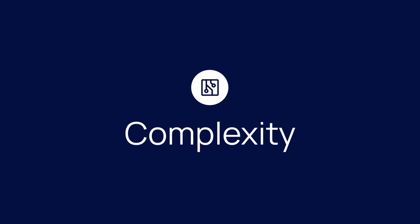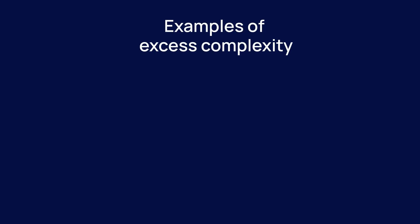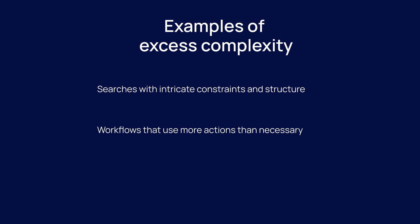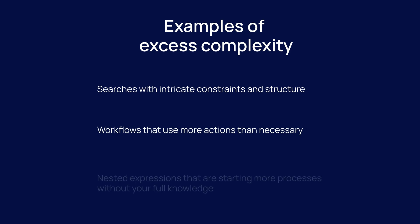Complexity refers to the process you use to achieve a certain goal. Using the car analogy, excessive complexity is like driving from point A to point B but taking unnecessary detours along the way. Some examples that often lead to additional consumption here are searches with intricate constraints and structure, workflows that use more actions than necessary, and nested expressions that are starting more processes without your full knowledge.